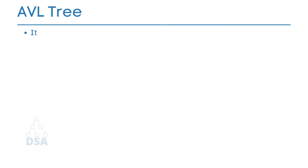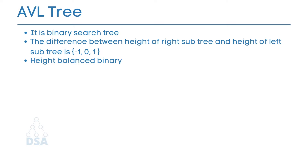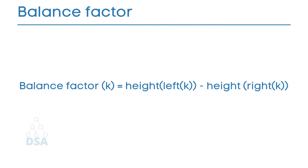AVL tree is a binary search tree. For each node in the tree, the difference between the height of the right subtree and the height of the left subtree is either minus 1, 0, or 1. AVL tree is a height balanced binary search tree in which each node is associated with a balance factor, which is calculated by subtracting the height of the right subtree from the left subtree.